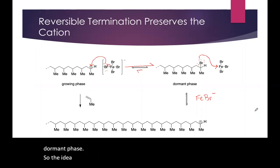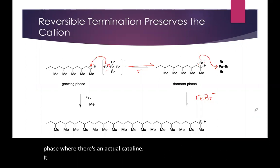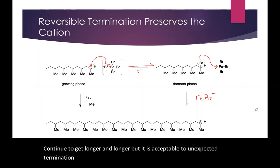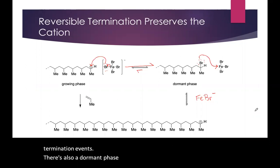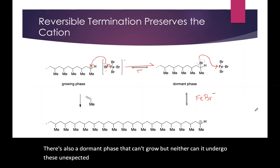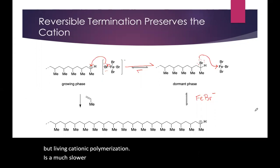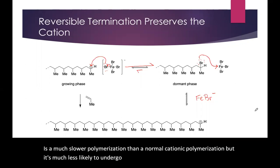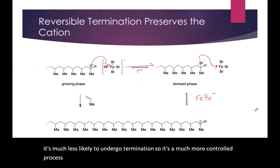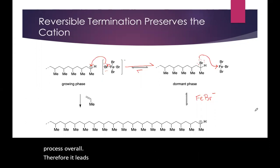The idea of living cationic polymerization is that there's a growing phase where there's an actual cation — it can continue to get longer and longer, but it is susceptible to unexpected termination events. There's also a dormant phase that can't grow, but neither can it undergo these unexpected termination events. As a result, living cationic polymerization is a much slower polymerization than normal cationic polymerization, but it's much less likely to undergo termination, making it a much more controlled process overall. Therefore, it leads to much narrower molecular weight distributions and gives polymers with much more reproducible properties.